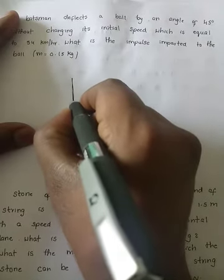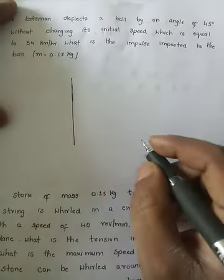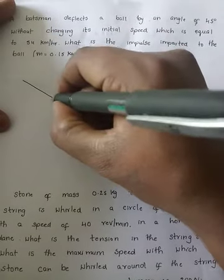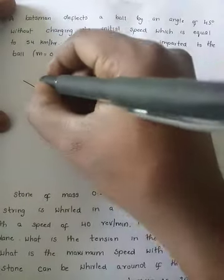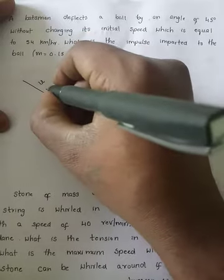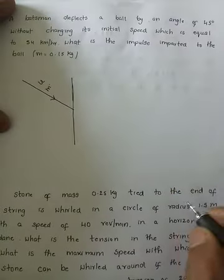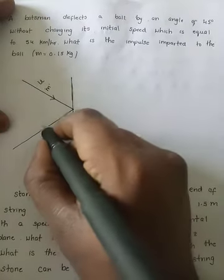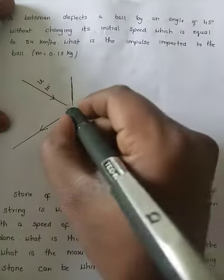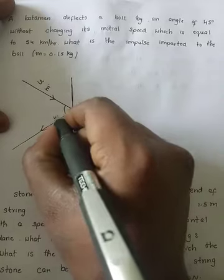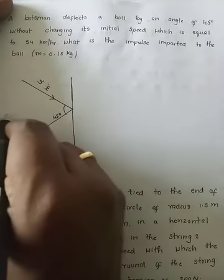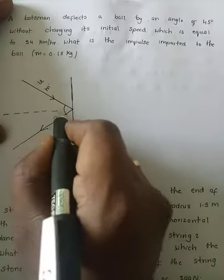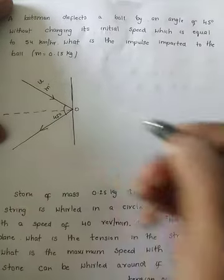Let us take that this is the surface of the bat and a ball is striking the surface with an initial speed u and mass of the ball is m. He deflects the ball — they clearly said that he deflects the ball by an angle of 45 degrees. This is 45 degrees and this is the point of contact.